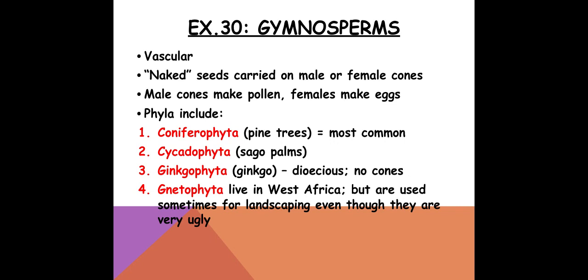We are going to look at really three, but mention a fourth different phyla. We have coniferophyta, which are pine trees — the most common. We have cycadophyta, which are sago palms, used commonly as lawn decorations and potted plants. Then we have ginkgophyta — they're interesting, dioecious, meaning separate male and female, and they actually don't have cones. There's only one extant, still-living species. And then gnetophyta are native to West Africa, sometimes used in landscaping — leathery, vine-looking plants. We won't spend a lot of time on them.